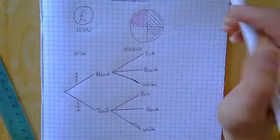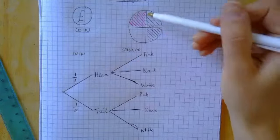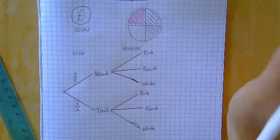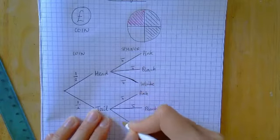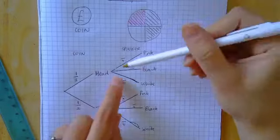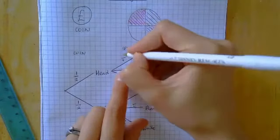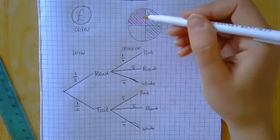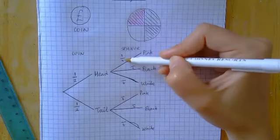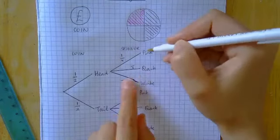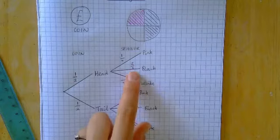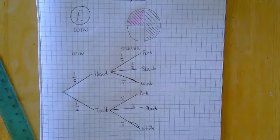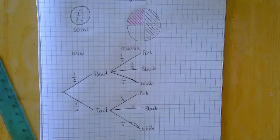Now let's look at the spinner. How many sections are there? My spinner has four sections, so all of our fractions are going to have a four on the bottom because there are four options. How about pink? There's one pink section out of four, so the probability is one over four. How about black? There are two black sections out of four, giving two over four. I know some of you are thinking we could simplify that — this is the only time in maths I tell you not to bother for now. We'll leave it and might simplify the answer at the very end.